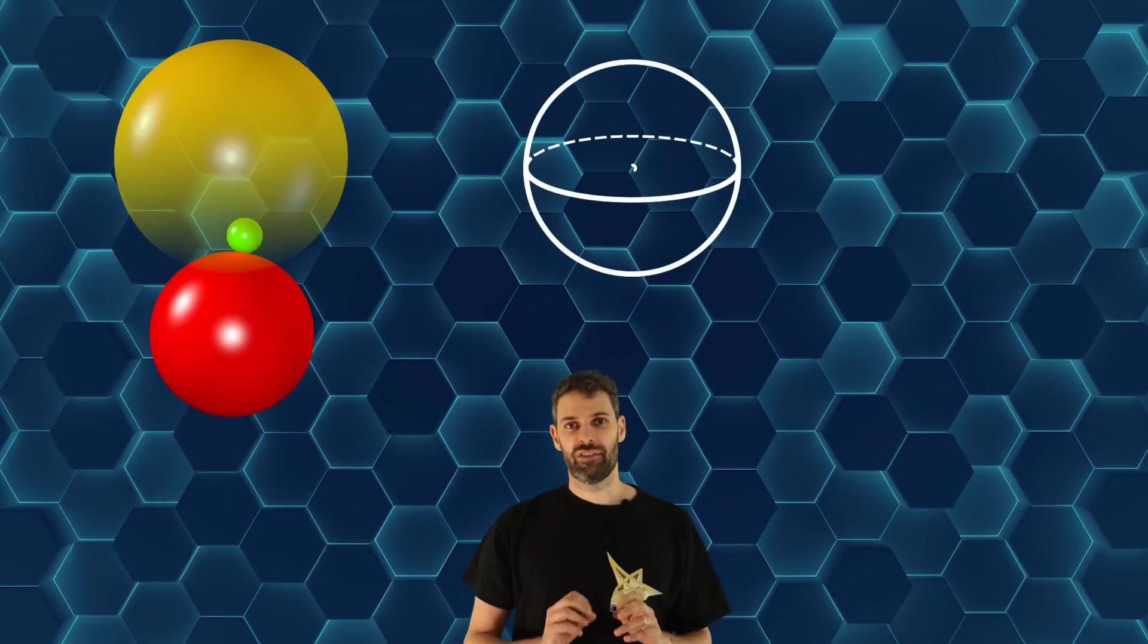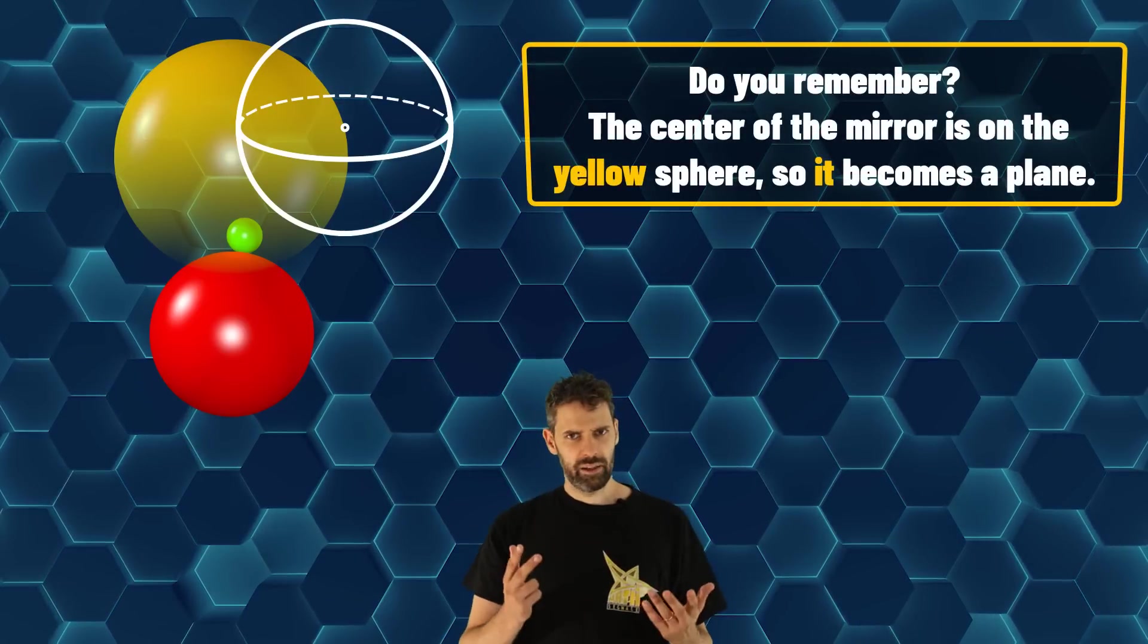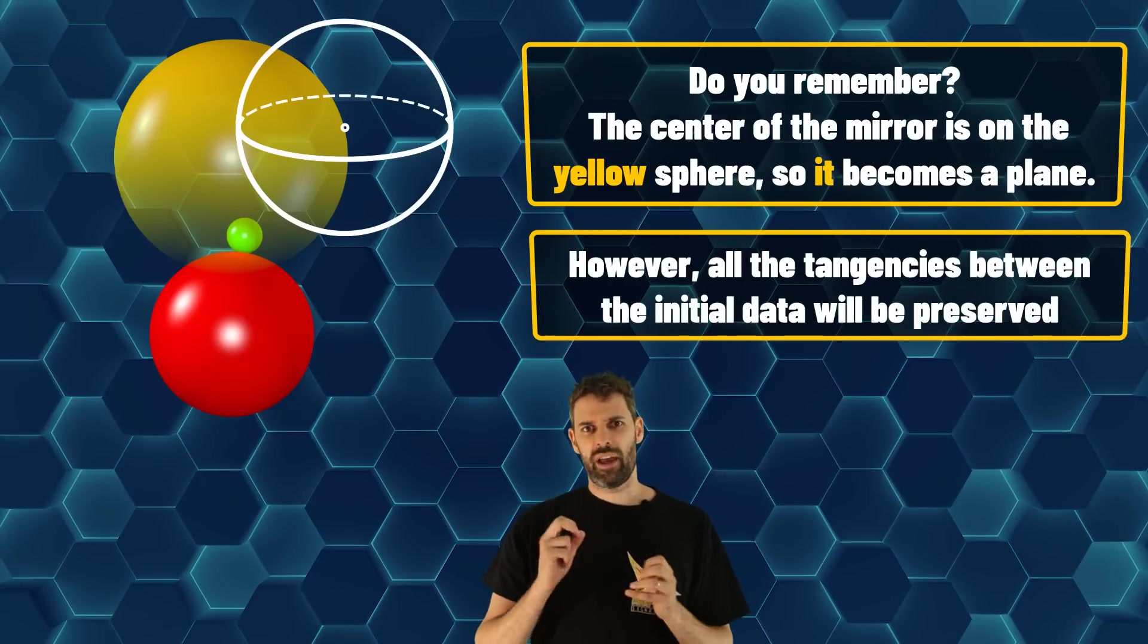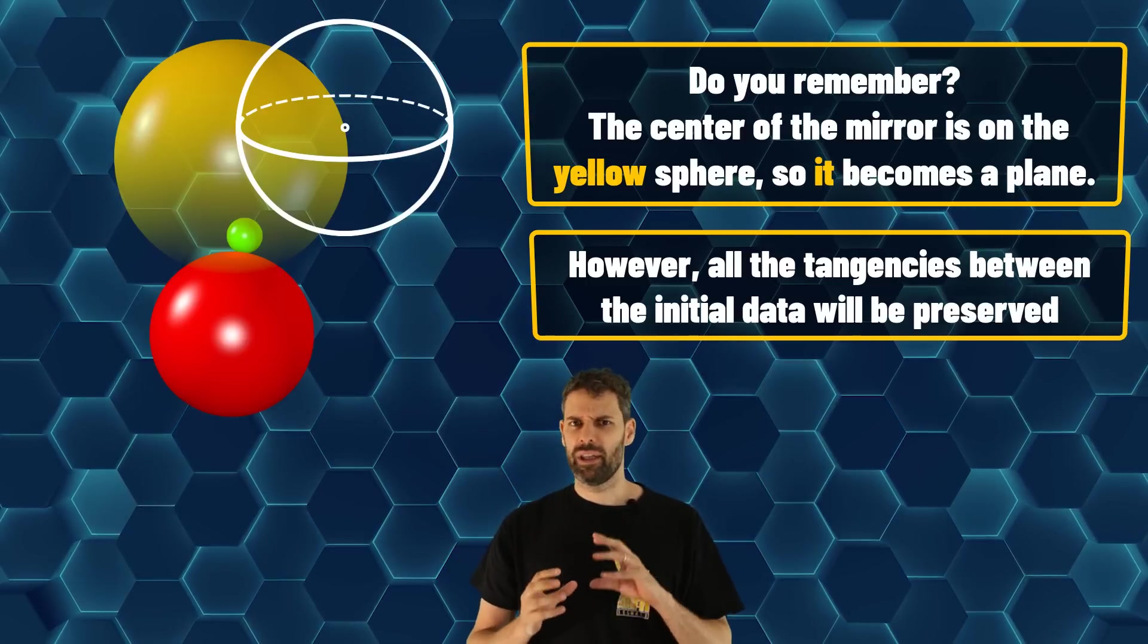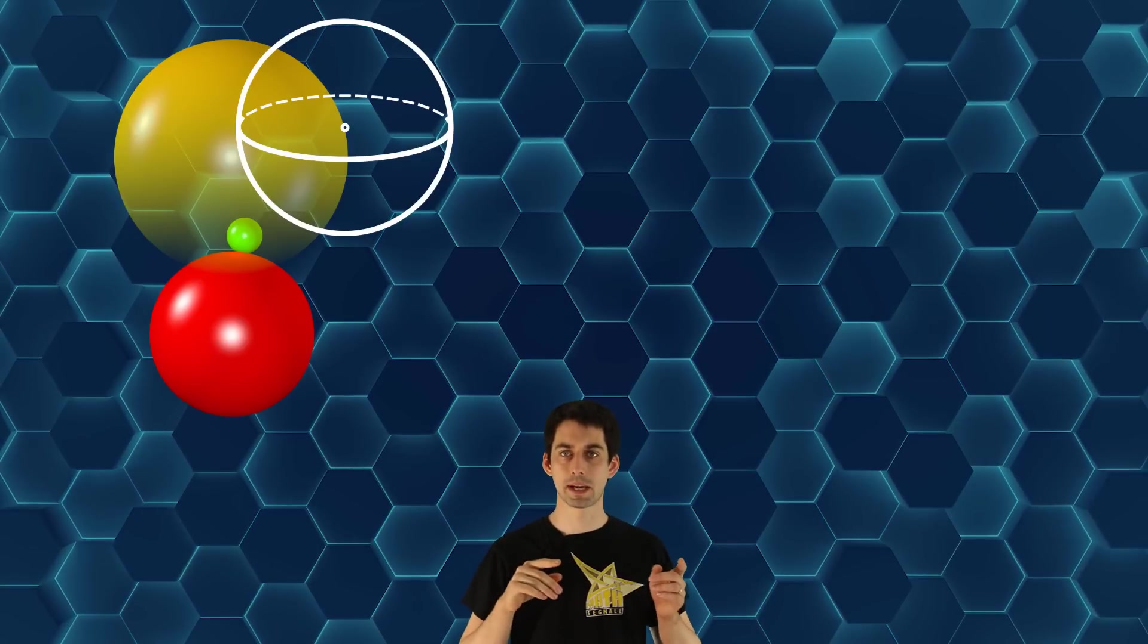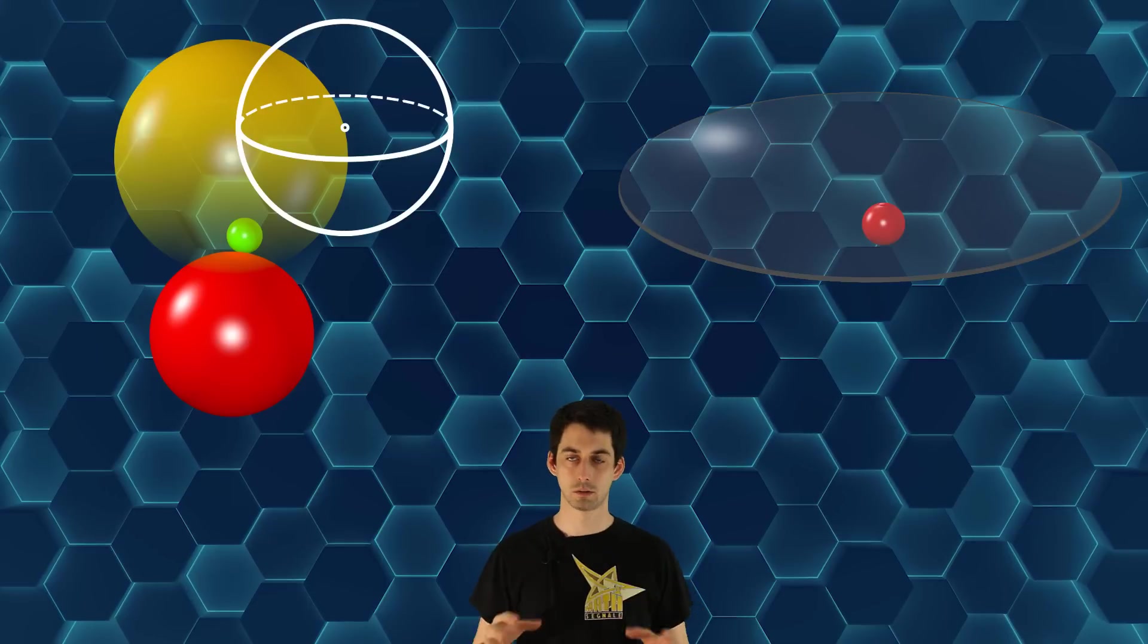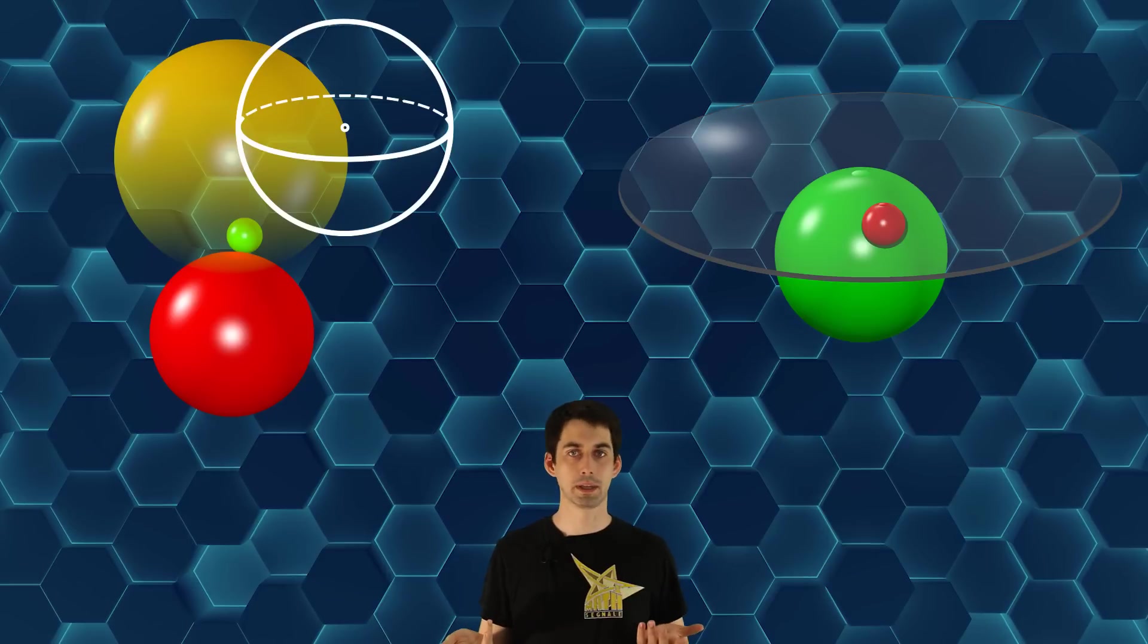What happens if the center of the mirror is on one of the three initial spheres? I expect the problem to break, because the yellow sphere will become a plane. Break? Why? The tangency conditions still hold. Only we have to say that these conditions are between spheres and planes and not only between spheres. So let's check what happens. As I said, the yellow sphere will become a plane, then the red sphere will still be a sphere tangent to this plane, and so will be the green sphere, and the green and the red will still be tangent to each other.